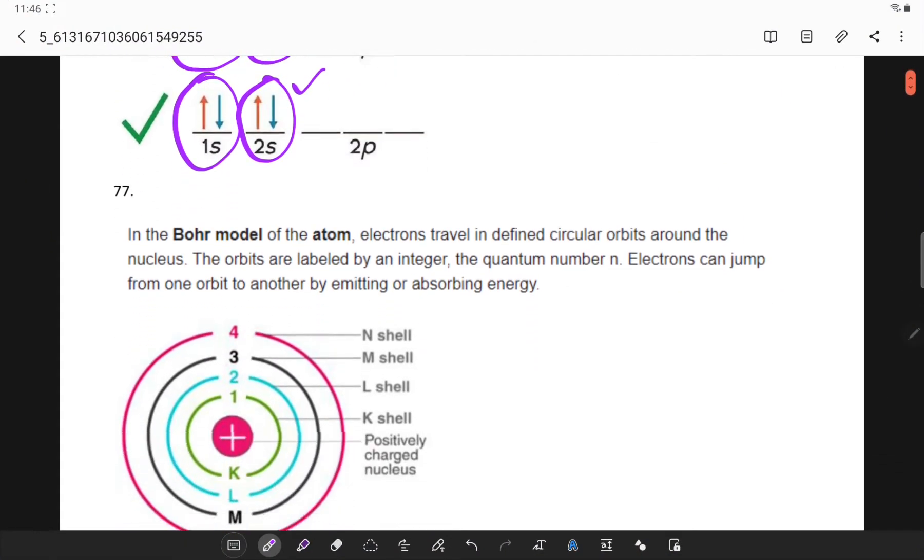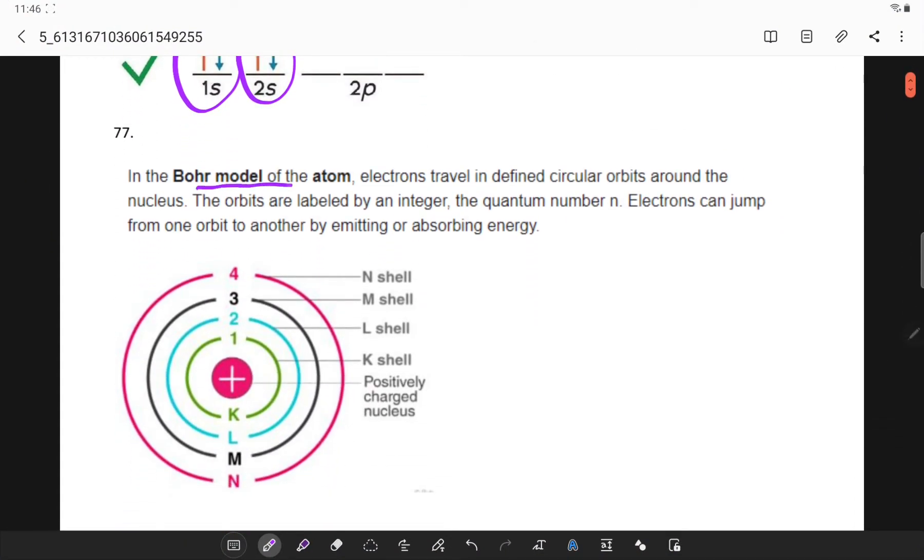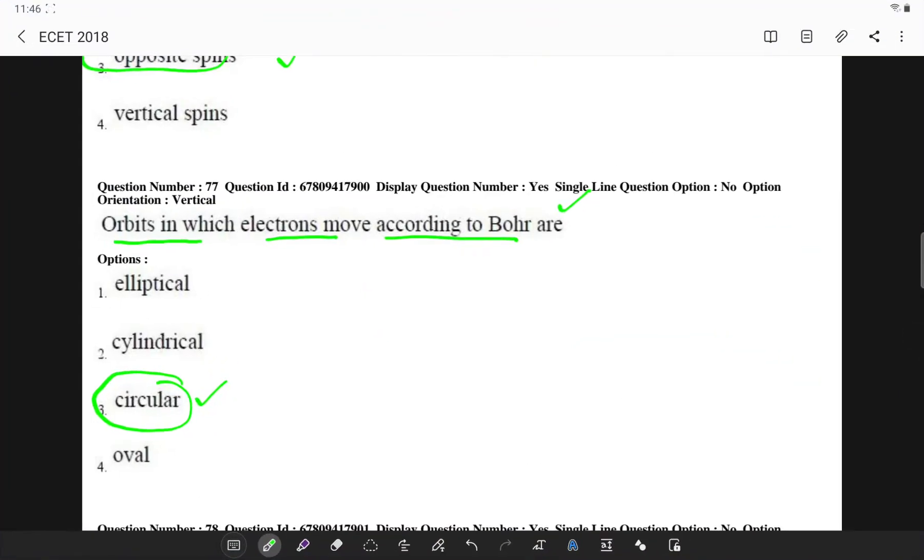So electrons move in circular orbits. We will see why exactly it is. So in Bohr model of atom, electrons travel in defined circular orbits around the nucleus. The orbits are labeled by integer quantum number and these electrons can jump from one orbit to another by absorbing energy. So we have the nucleus here, then we have K, L, M and N shells.